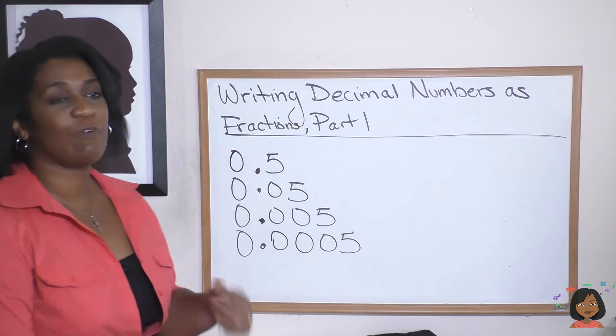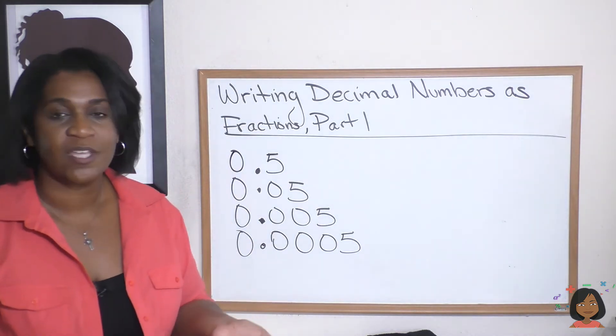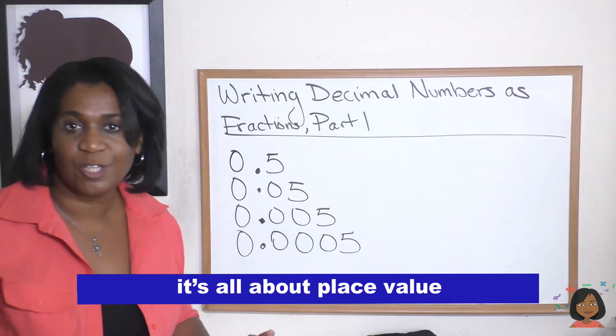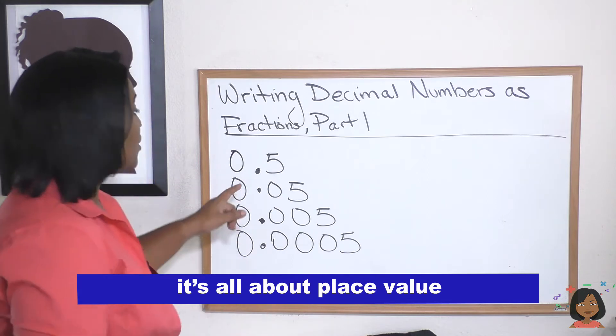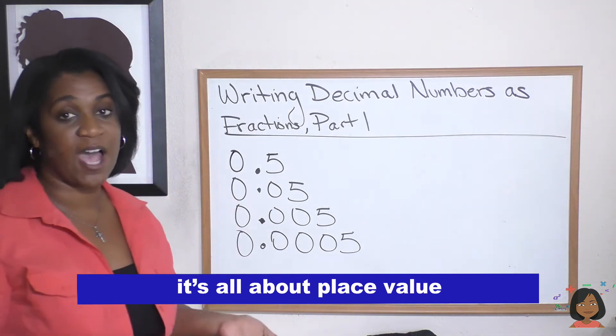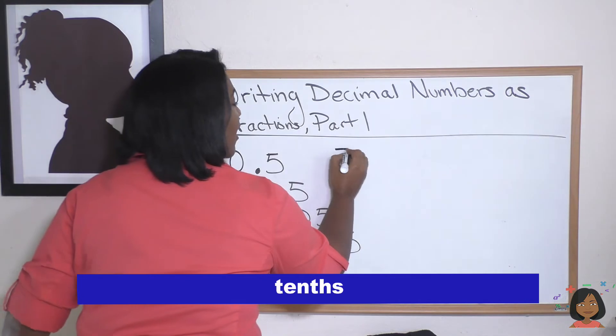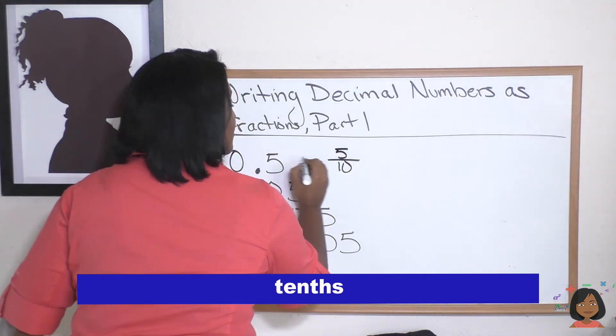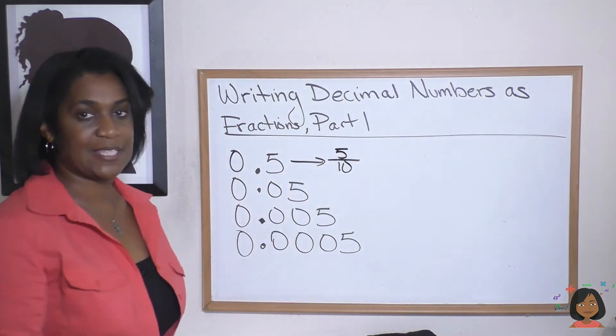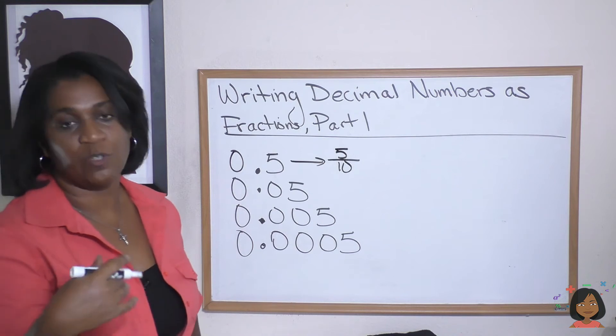But how do I write this as a fraction? Very simple. All you have to do is look at the place value. Starting here we have five tenths, which means it's five over ten. That's it.